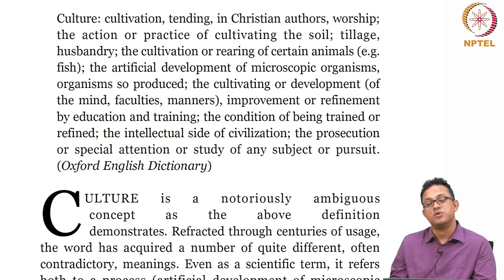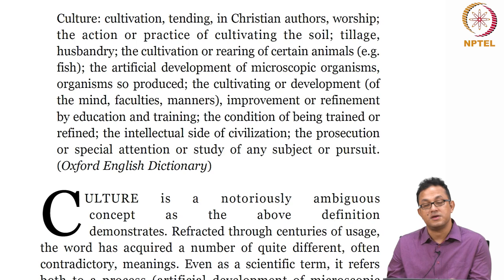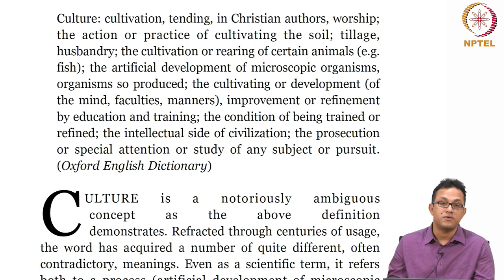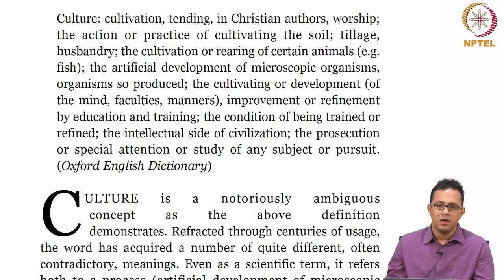You can artificially rear something, construct something, create something. There is also a natural side of culture — something that happens automatically through processes of internalization. So again we are back to one of those words I have been using since the very inception of this course: an entanglement. An entanglement of artificiality and naturalness, an entanglement of materiality and abstraction. If you look at these definitions you find that there are very material things about culture — soil, fish, animals, microscopic organisms — but at the same time, looking at culture at the level of ideas as an ideational category highlights its abstract quality.